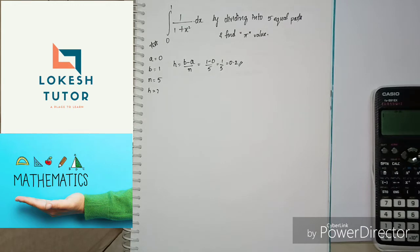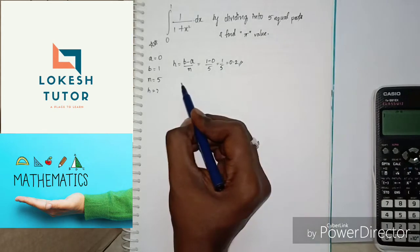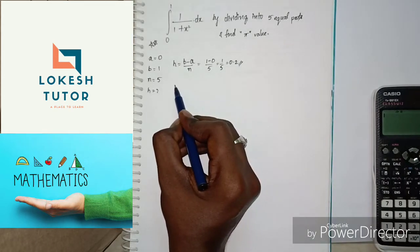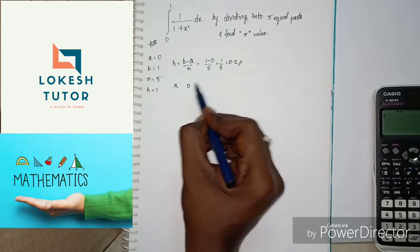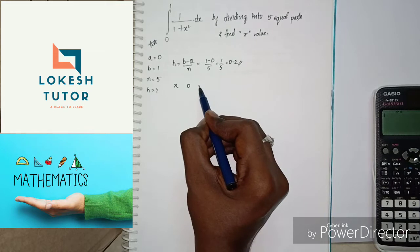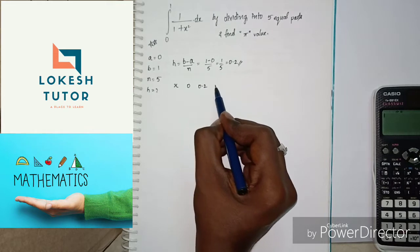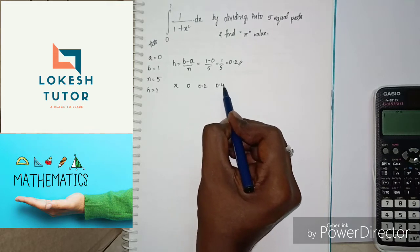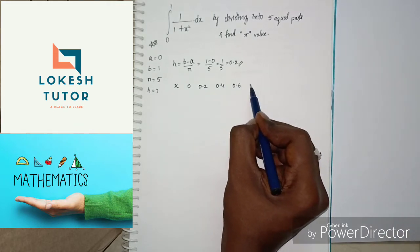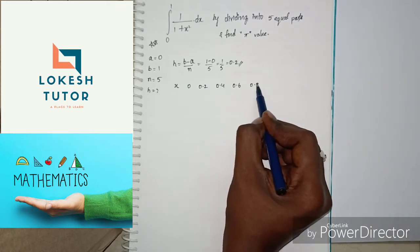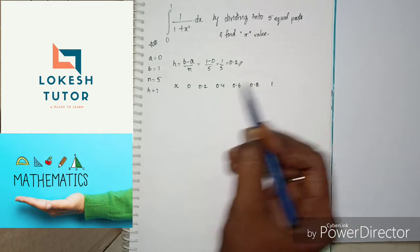Now we calculate the function values. First, the x values: x0 is 0, then 0.2, 0.4, 0.6, 0.8, and 1.